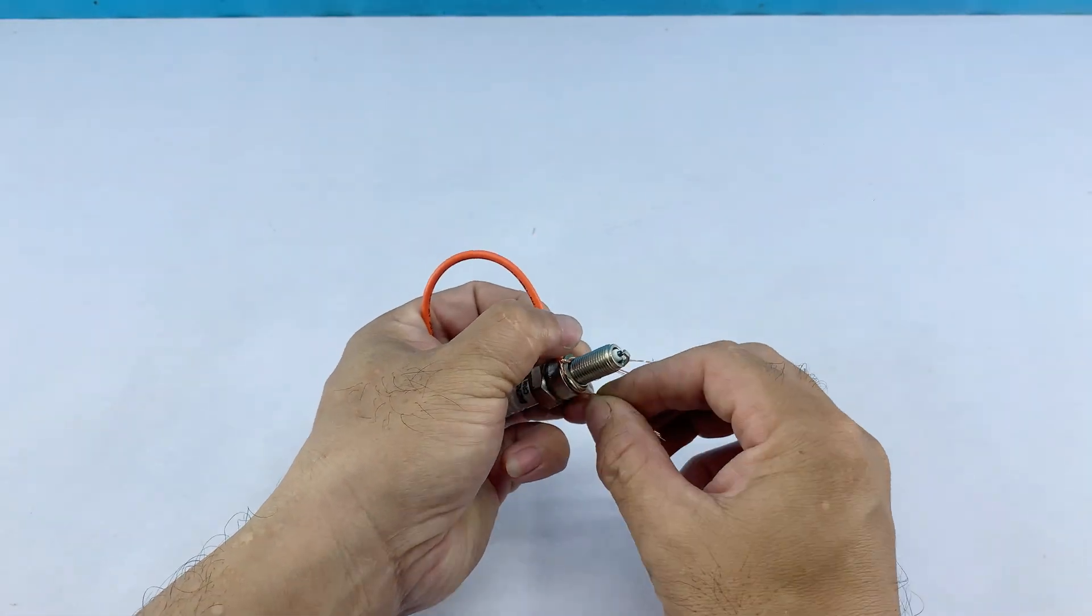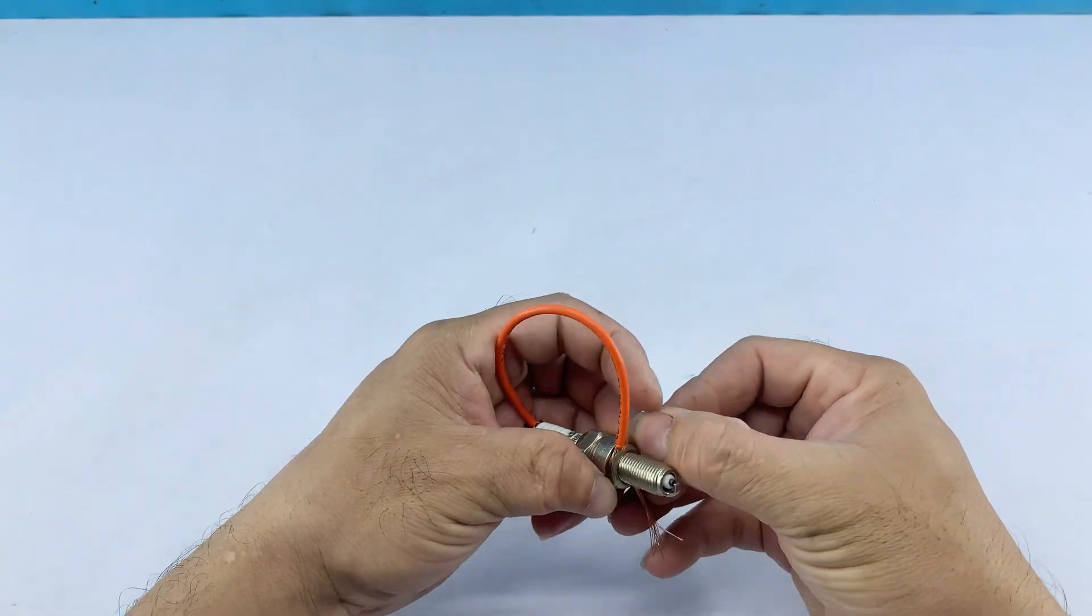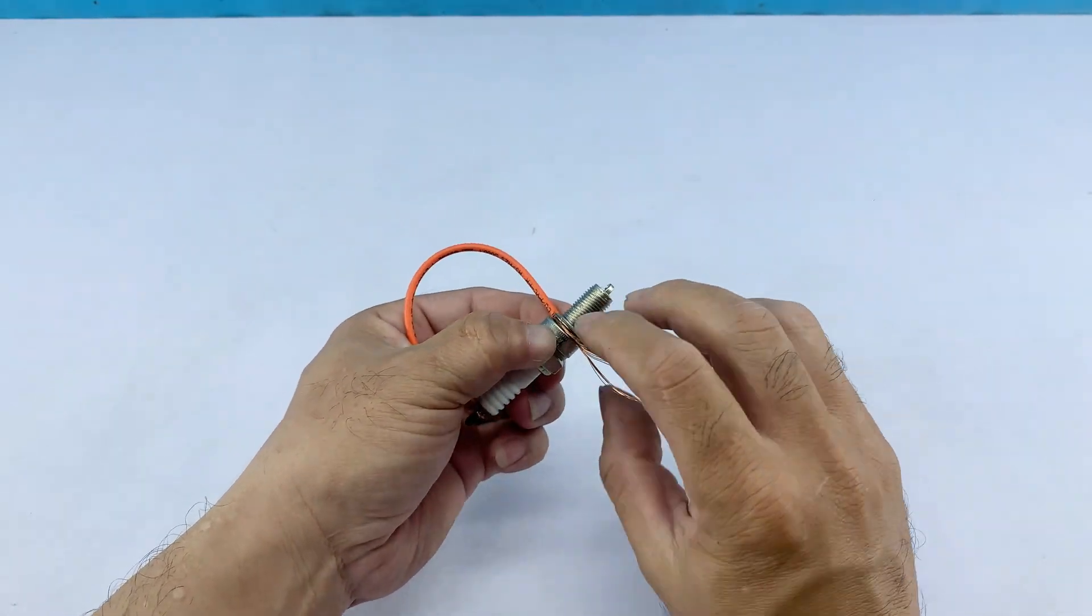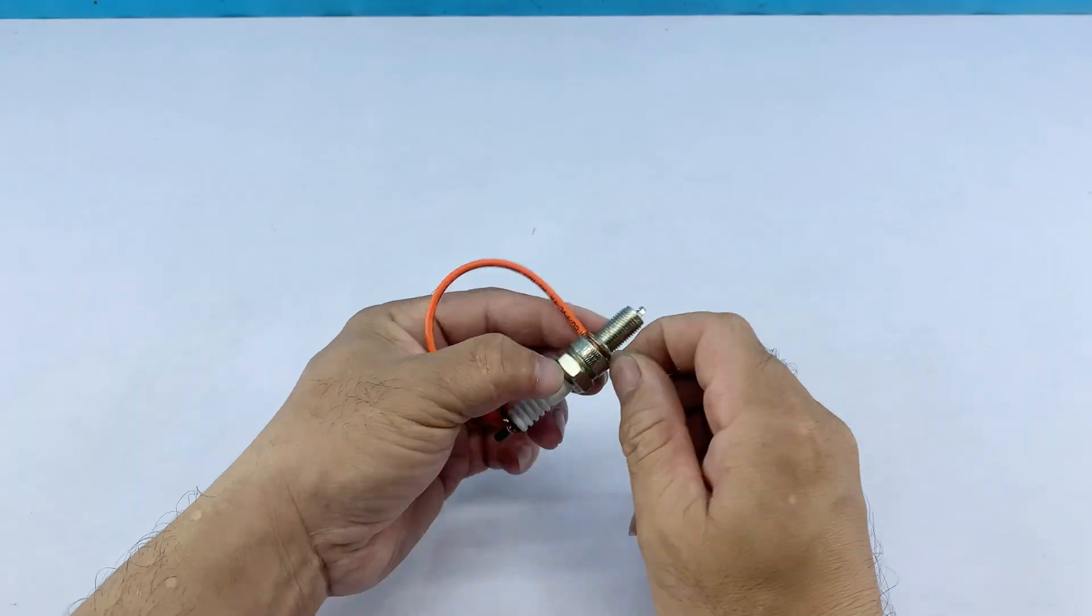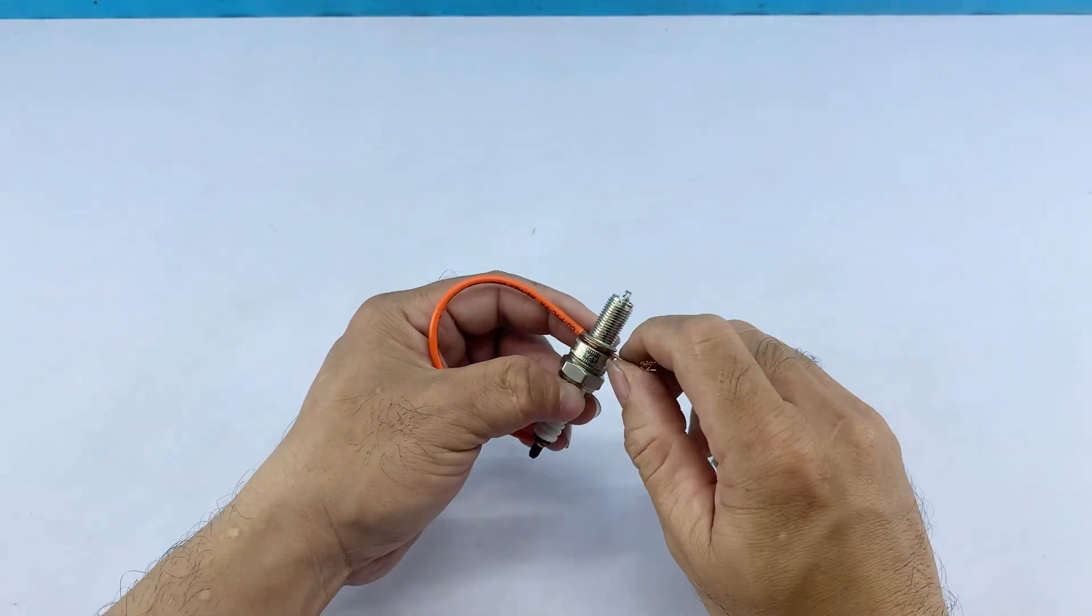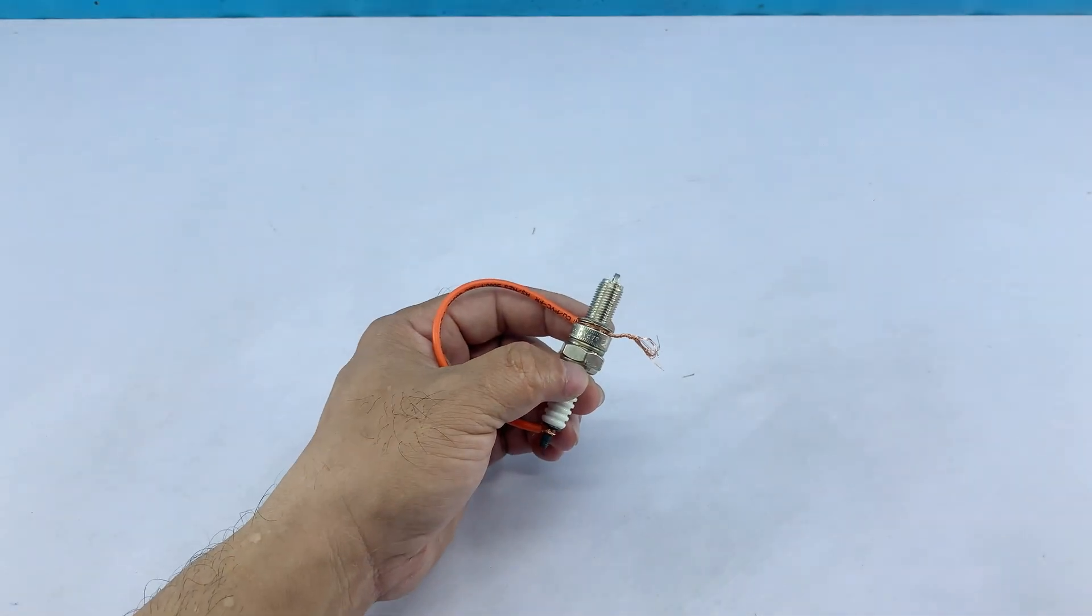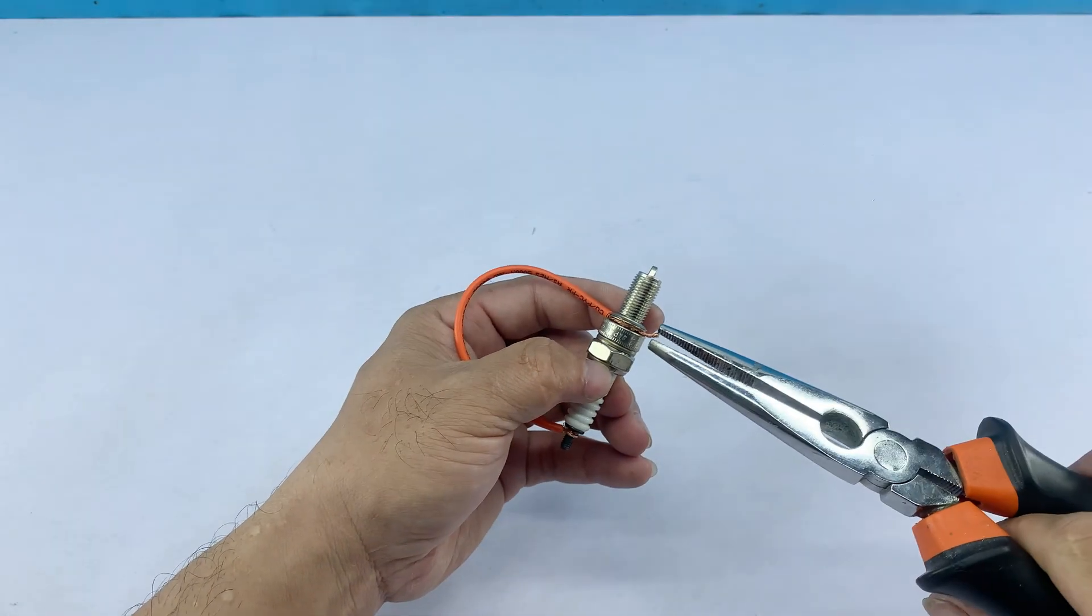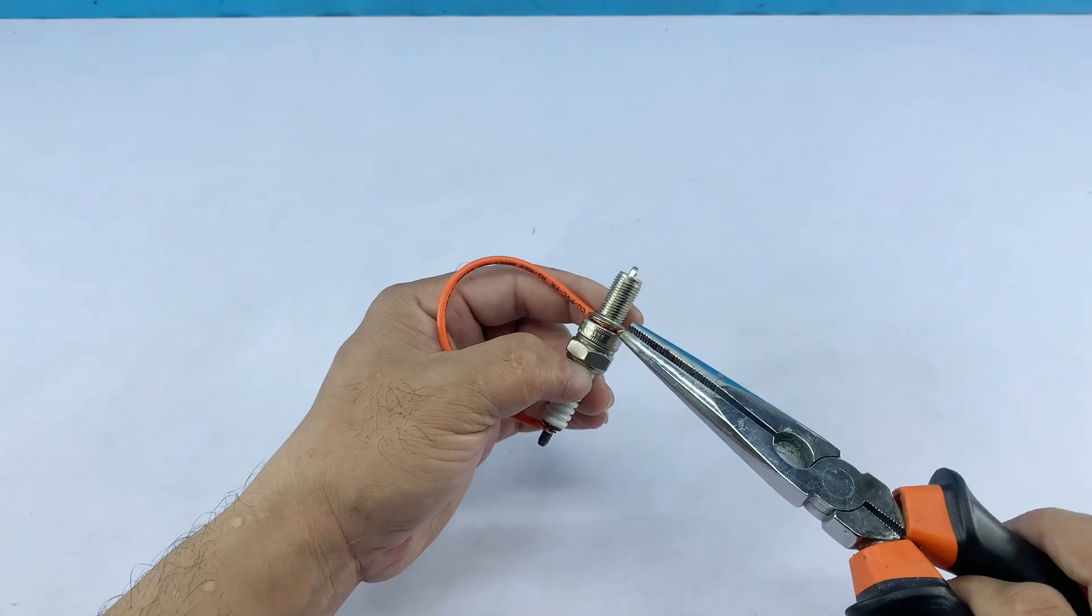I split the stripped wire into two parts and twisted them together in preparation for the next connection. Next, I'm threading the wire through the small nut that was originally on the spark plug, ensuring it wraps securely around the terminal as well. This provides a clean and stable connection point. After wrapping, I trim off any excess wire to keep it neat and prevent short circuits.